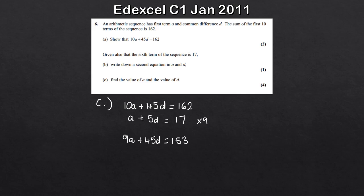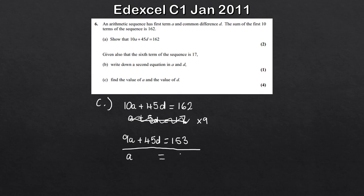Now solving these two simultaneous equations - if the coefficients are the same we subtract. So 10A minus 9A gives us A, the D terms cancel to zero, and 162 minus 153 gives us 9. So A equals 9.